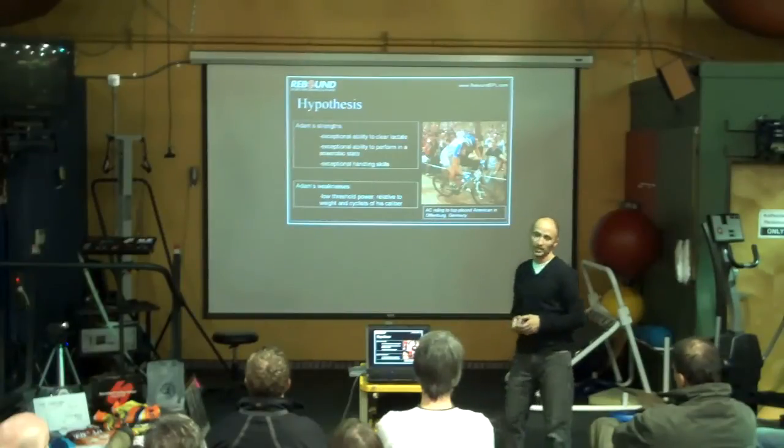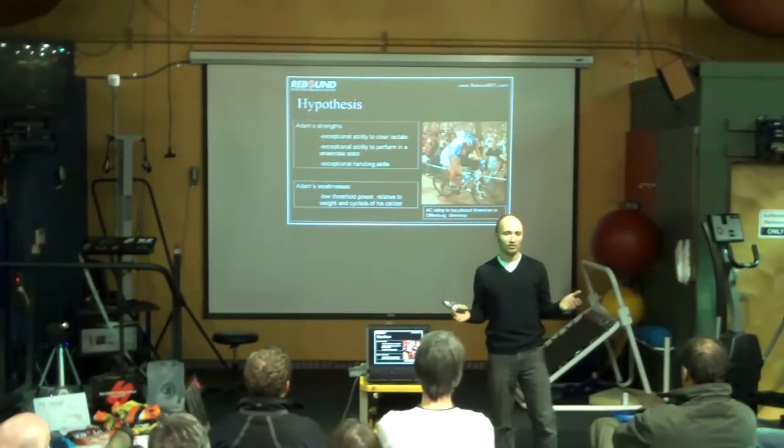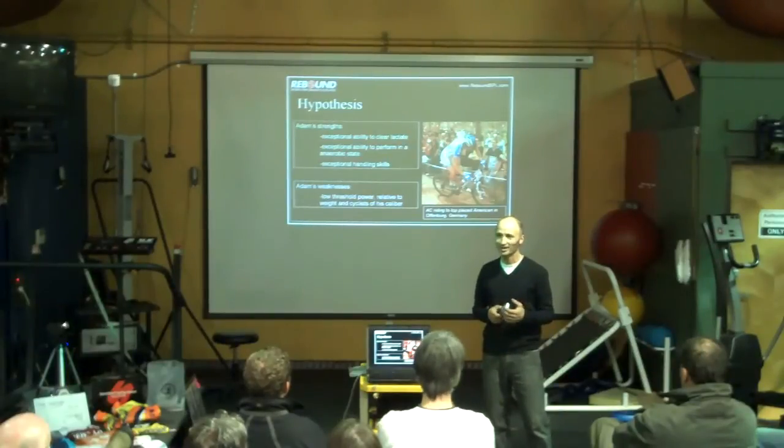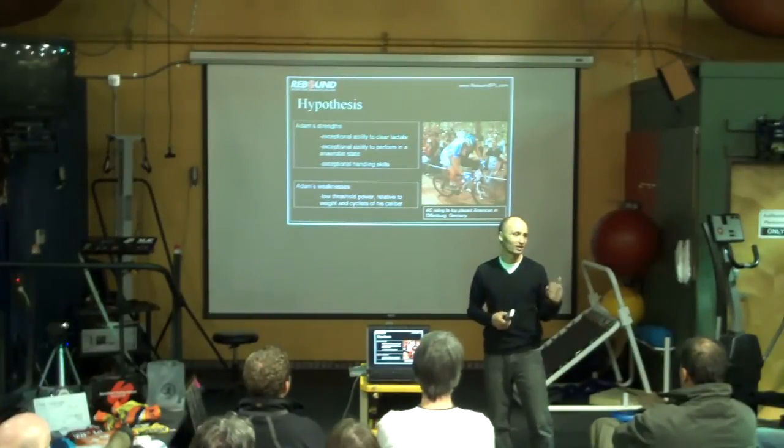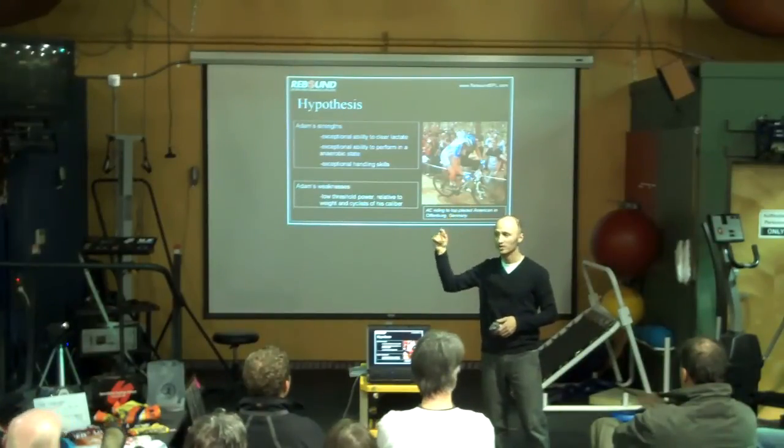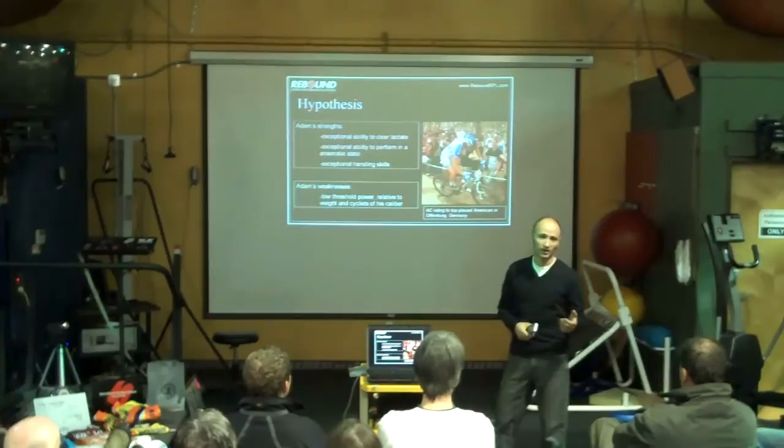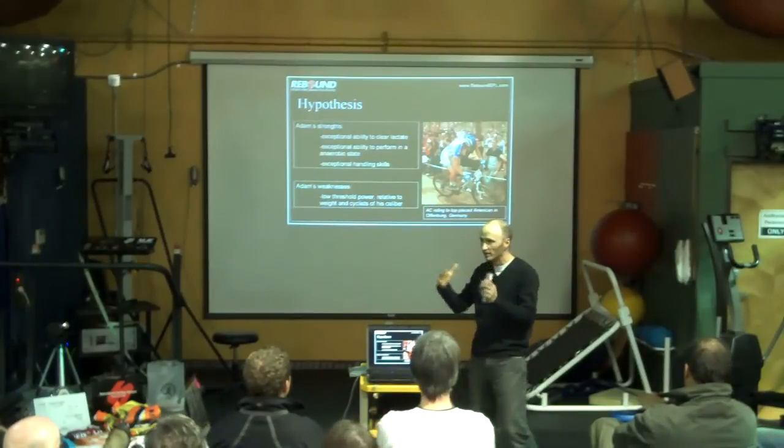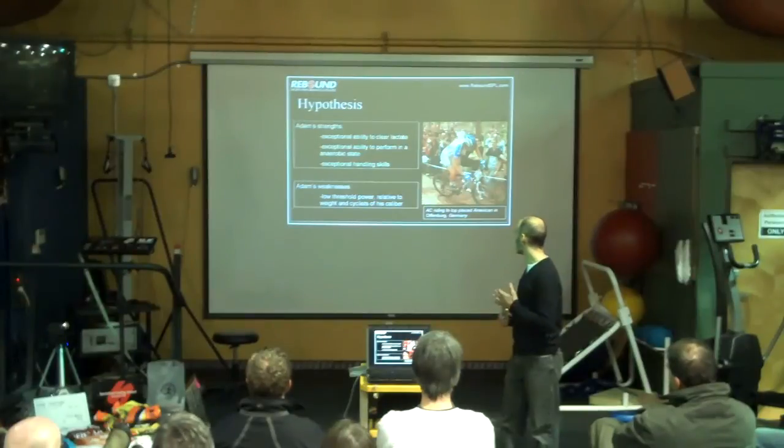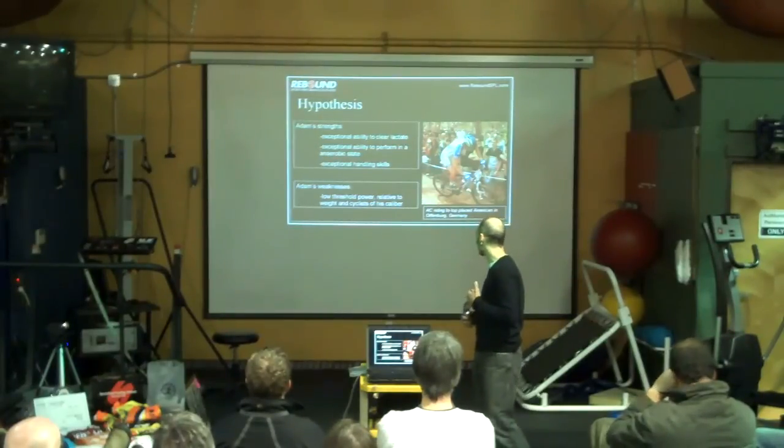This is kind of what we were thinking. Adam's strengths. Now, take it for granted. These guys are both awesome bike riders. So, their strengths and weaknesses are very relative. It's kind of like trying to find the chink in your opponent's armor. When you're at the top level, that's very small. It's one or two percent. So, a weakness here is very minor, but we're trying to kind of see what the differences are. This is what we hypothesize that Adam has an exceptional ability to...